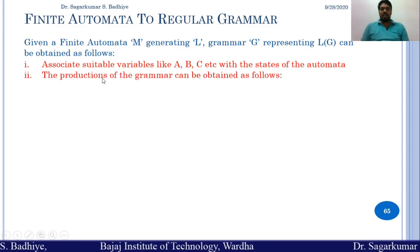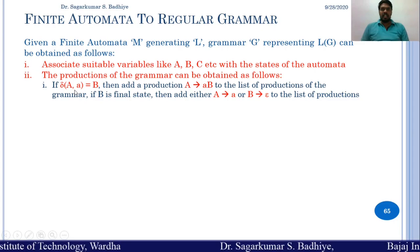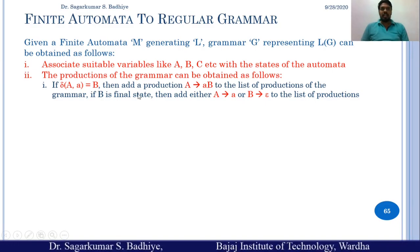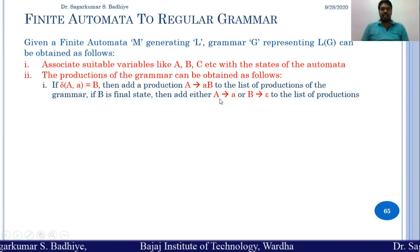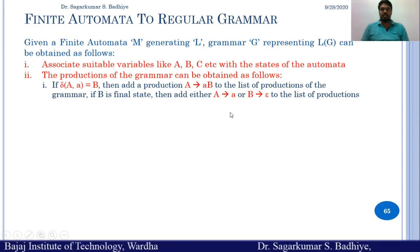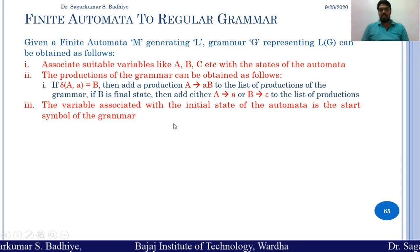Next, the productions of the grammar can be obtained as follows. Suppose there is a transition delta(A, a) goes to B, then we add a production A derives to small a, capital B, to the list of productions. And if B is a final state, then we either add A derives to small a, or B derives to epsilon, to the list of productions. The variable associated with the initial state of the automata is the start symbol of the grammar.